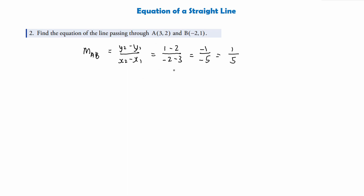Now we have our gradient and a point, so let's take point A. We use the formula y subtract b equals m times x subtract a. We get y subtract 2 equals (1/5)(x subtract 3). It's nice to pick the point with easier values — point A has two positive values, so it's slightly easier than point B which has a negative.